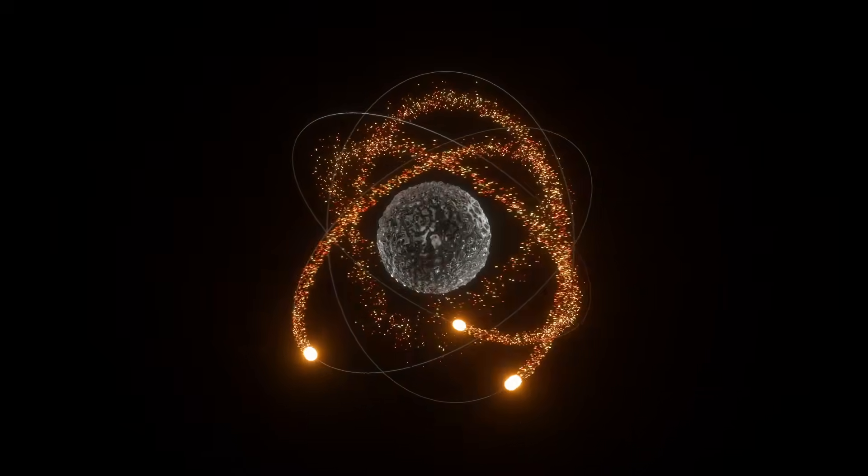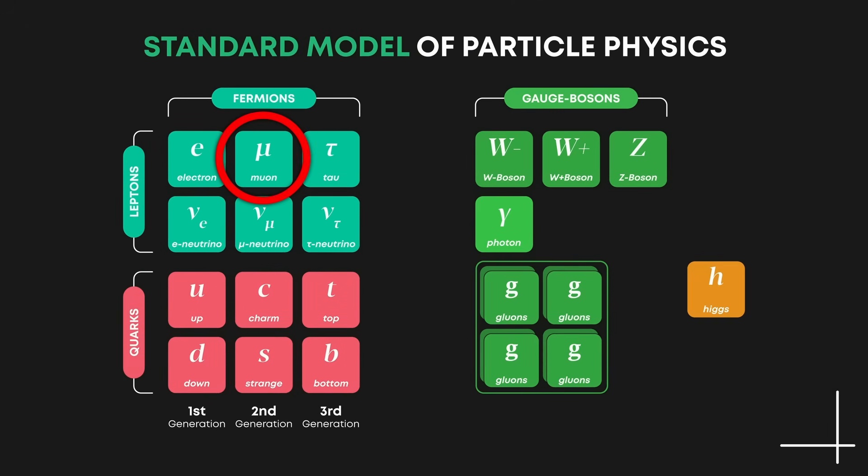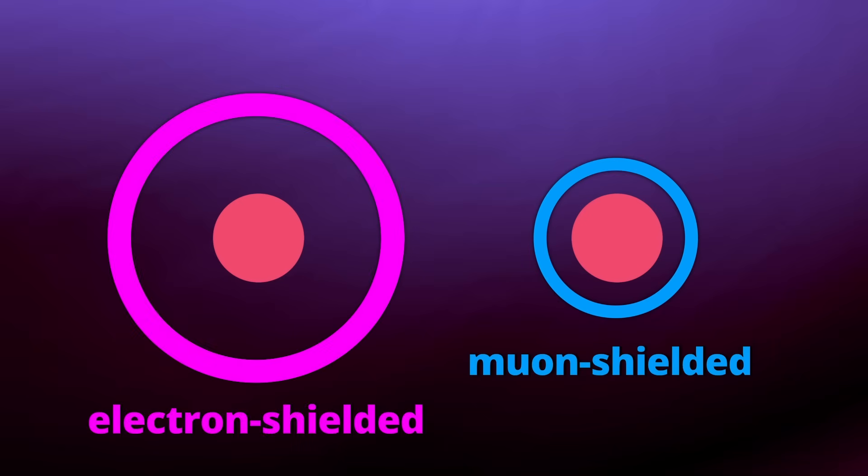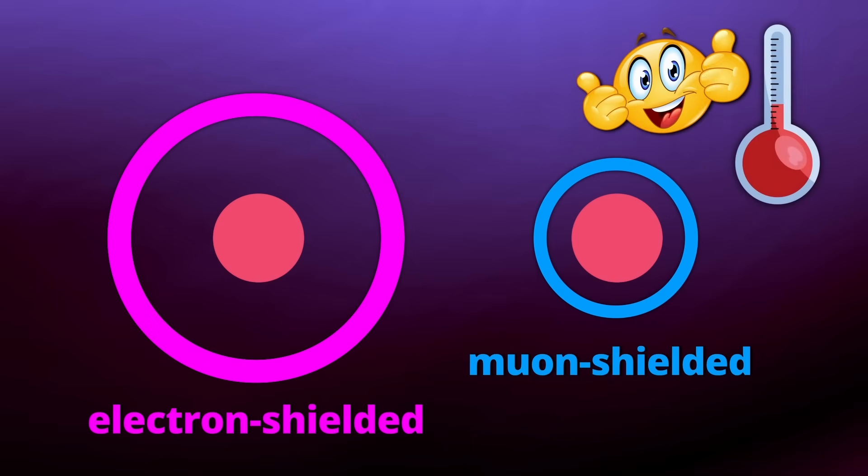Enter muons. Muons are elementary particles similar to electrons, but about 200 times heavier. And because muons are so much heavier, their energy orbitals around atomic nuclei are much smaller. This means if you replace the electron around a hydrogen atom with a muon, you can bring the nuclei closer together without the electric repulsion getting in the way. And that much increases the fusion probability, even at room temperature.